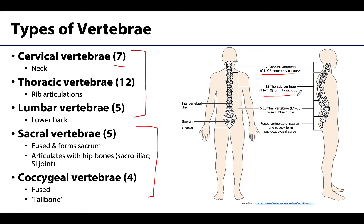There are 12 thoracic vertebrae, and these will articulate with the ribs. And there are five very large lumbar vertebrae in the lower back region. I like to remember the number of each type by the times I eat: breakfast at 7 a.m., lunch at 12, and an early bird dinner at 5 p.m.